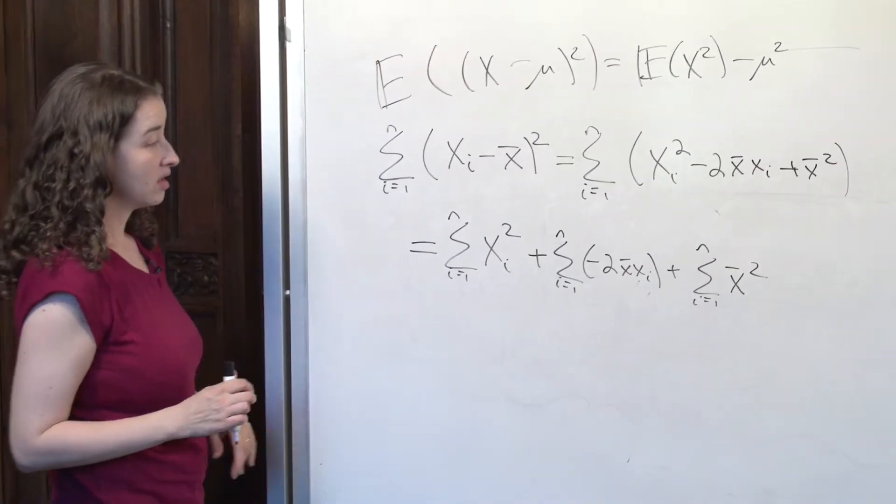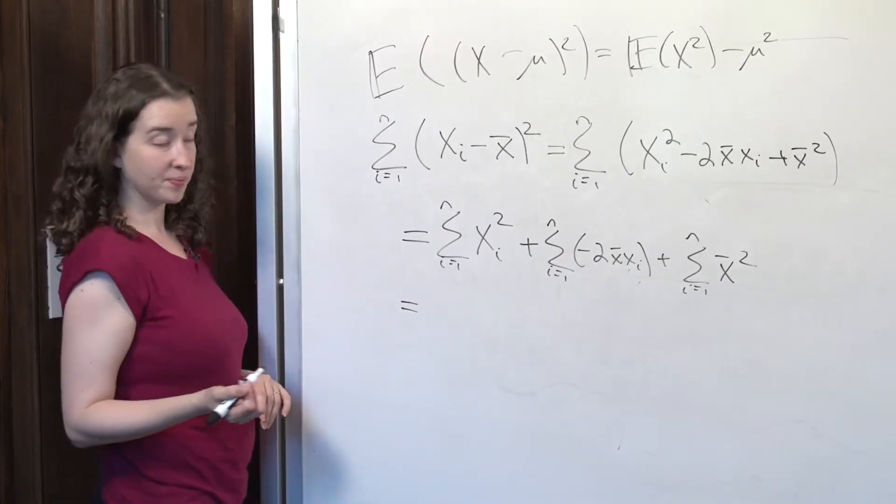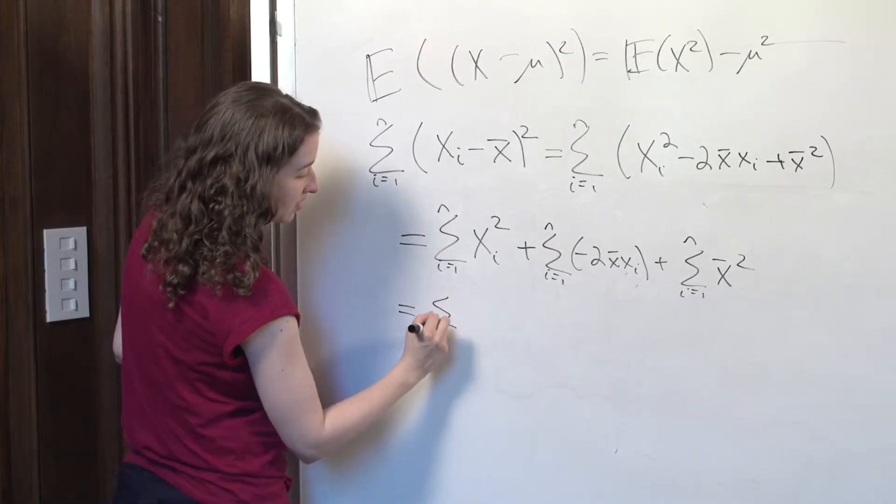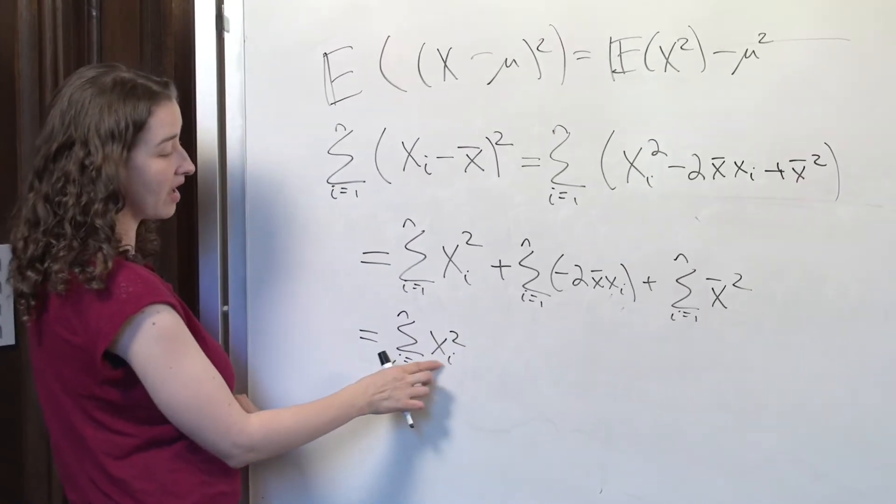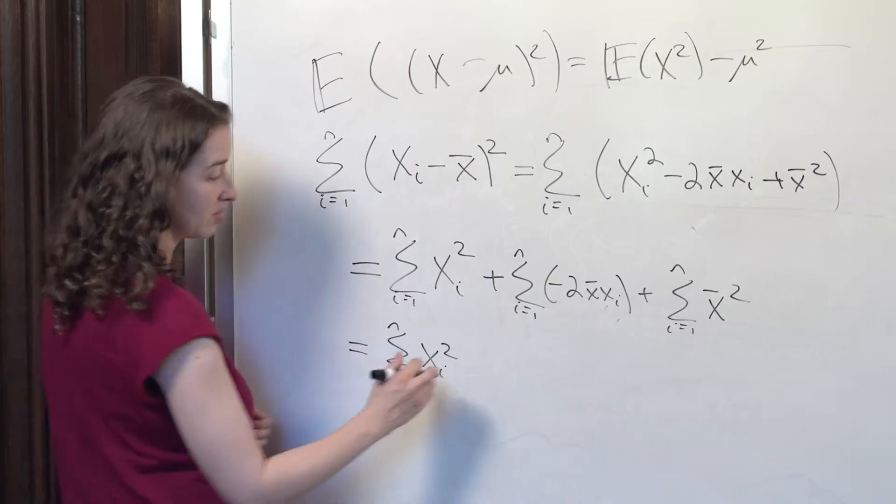And just as we did when we were thinking of the expectation in order to derive this idea, we're going to look at each of these sums and see what can be factored out. In the first one, the answer is nothing can be factored out. You need those xi squared. This is the sum of every value in your sample after you've squared every value in your sample.